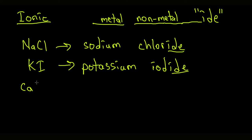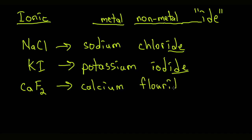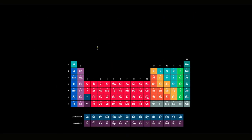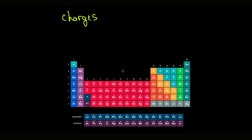Then we have CaF2. The name is calcium, and the non-metal fluorine becomes fluoride as the ending changes to I-D-E. This stays pretty consistent throughout. Now if you're wondering about the subscript 2, we need to learn how to go backwards from the name to the formula. To understand that, we have to look at the periodic table of elements and understand charges of different groups. I'm going to link that previous video here — that knowledge is required to understand the rest of today's lecture.